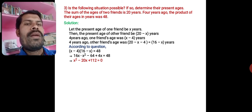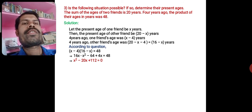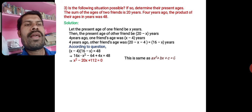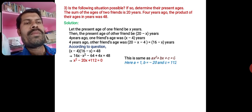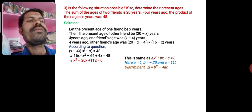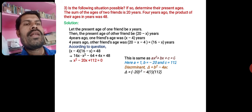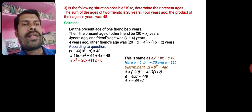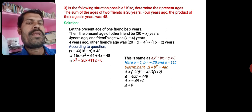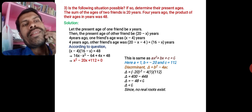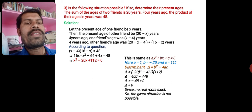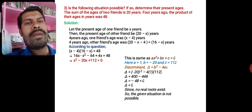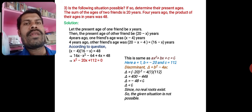Simplifying, we get x² − 20x + 112 = 0. Here a = 1, b = −20, c = 112. The discriminant is b² − 4ac = (−20)² − 4 × 1 × 112 = 400 − 448 = −48. Since delta is negative, the discriminant is less than 0, so no real roots exist. Therefore the given situation is not possible.